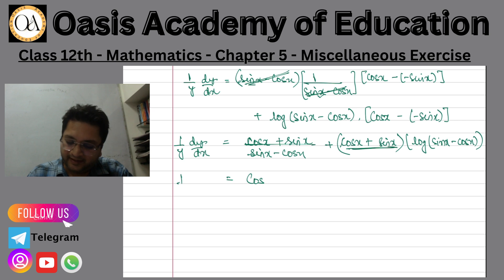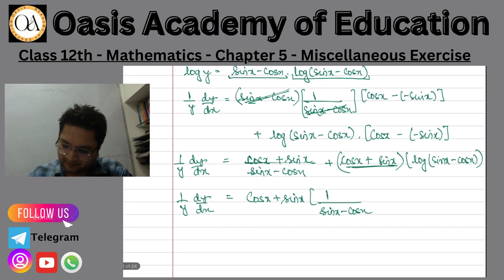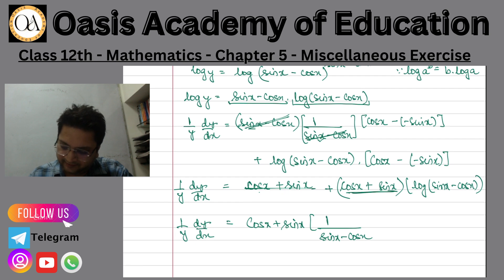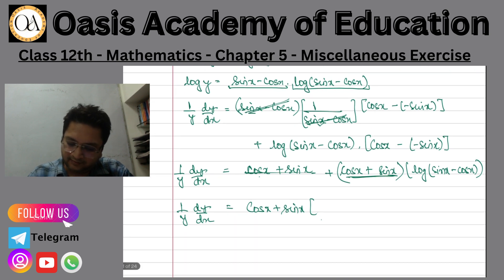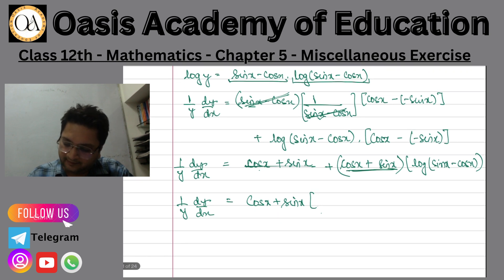Cos x plus sin x, I have 1 upon sin x minus cos x. Sorry, I have to correct this. Because it is already cut, so I have to do something with this. If you can see, 1 plus log sine x minus cos x.